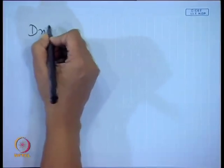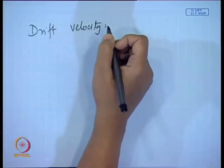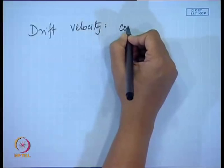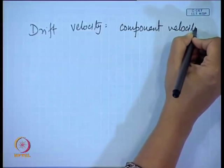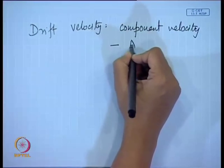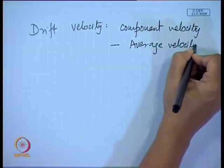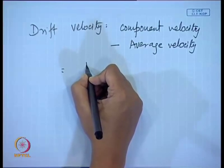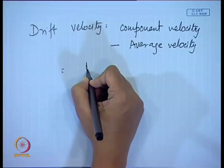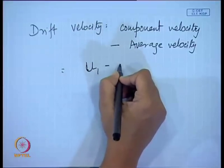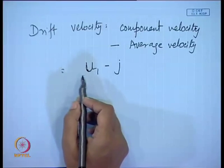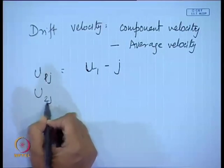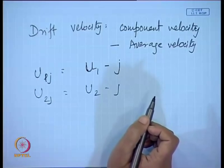The drift velocity is defined as the component velocity minus the average velocity. The component velocity is u₁ and the average velocity is j. So the drift velocity is: u₁ⱼ = u₁ − j, and u₂ⱼ = u₂ − j.